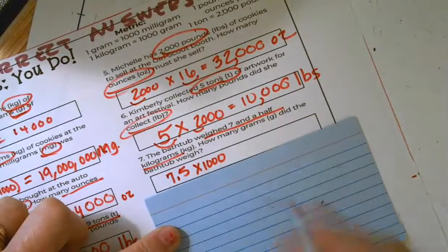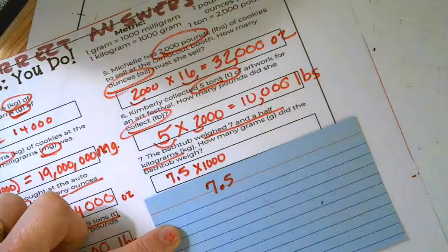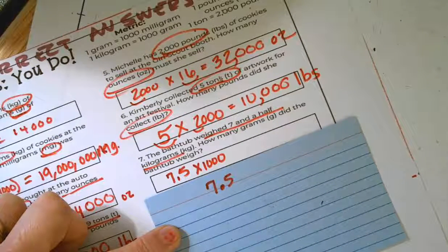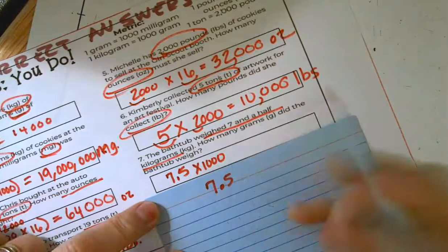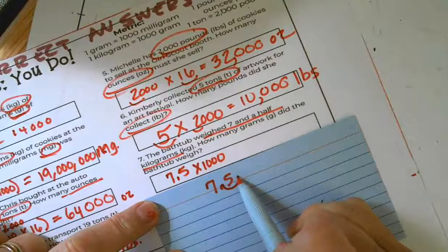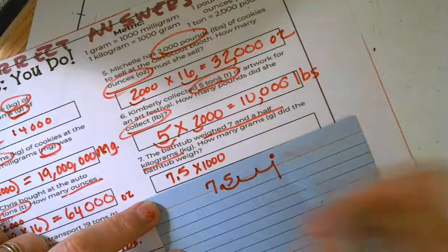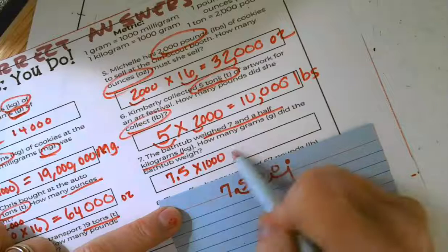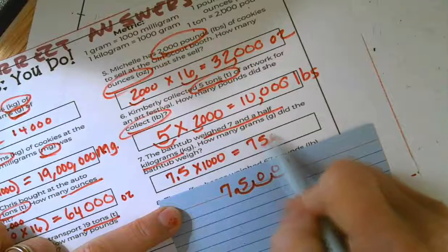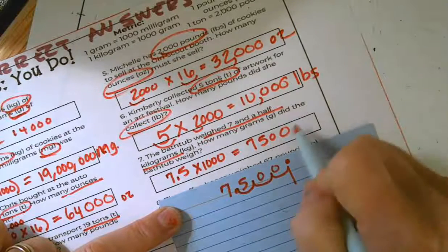And if you recall, when we multiply by 1,000 or 100 or 10, we can shift our decimal point to the right. So we're getting 1,000 times bigger. So I'm going to move that over 1,000, 2,000, 3,000 place value positions. I'm going to need to annex two zeros into that. And so I'm going to get an answer of 7,500 of those grams.